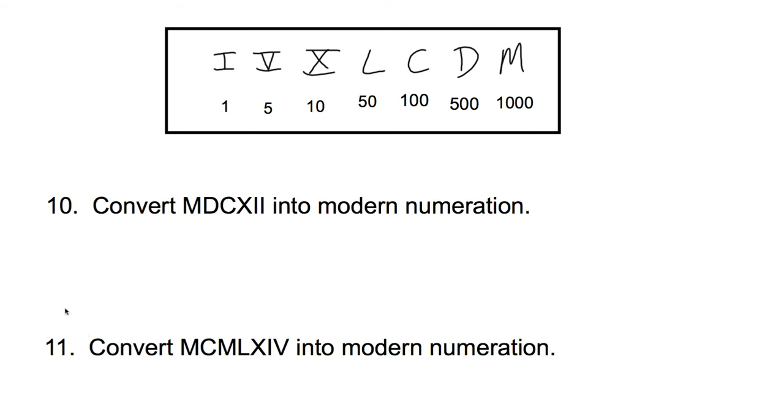I have a few more examples here. Let's convert MDCXII to modern numeration. In order to do this, I'll just go down this list one at a time. M is 1000. The D is 500. And the C is 100. Values are going down, so I know that I'm going to continue adding. The X is 10, and the two I's, that makes 2. So that's 1500 plus another 100, that's 1600, 1612 is the answer for that one.